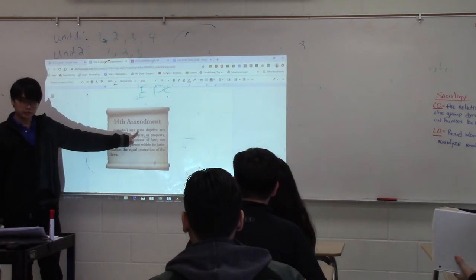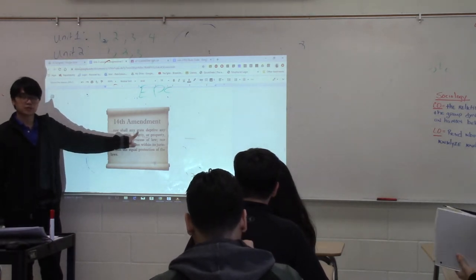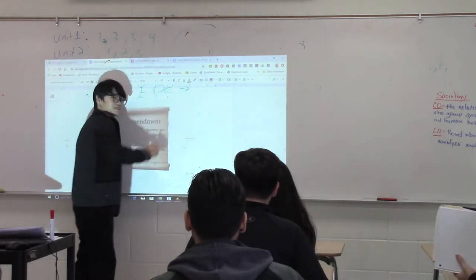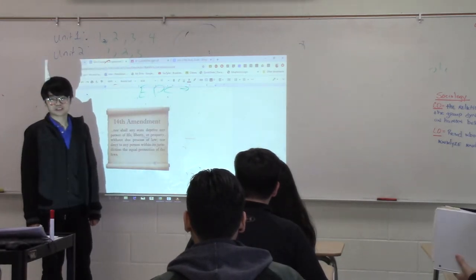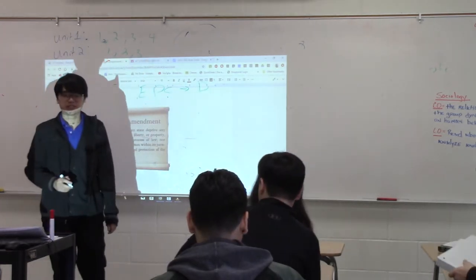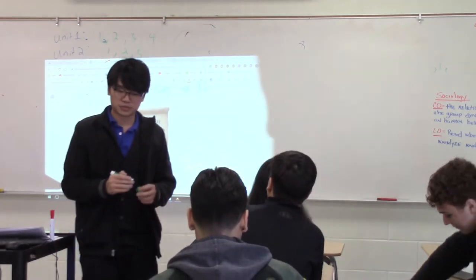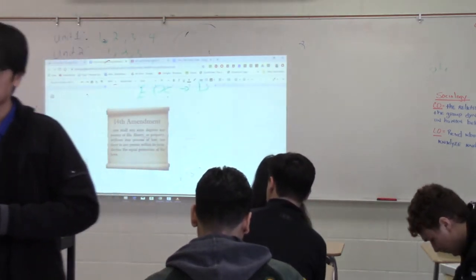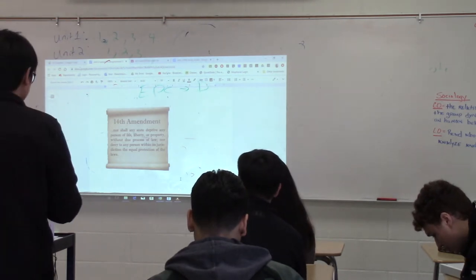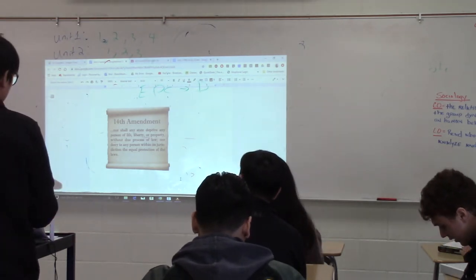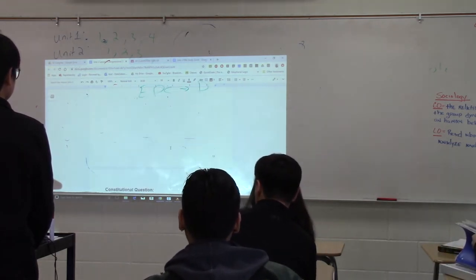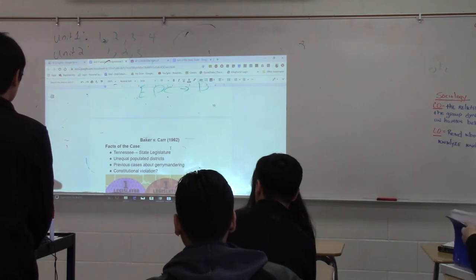No state, no government, can deprive anyone of equal protection of the law. What that means is no government can discriminate. The Equal Protection Clause prevents any government from discriminating upon its own citizens, especially state governments. Make sure you remember that about the Equal Protection Clause — it's very important for today, because the next two Supreme Court cases we're going to talk about deal with the Equal Protection Clause of the 14th Amendment.